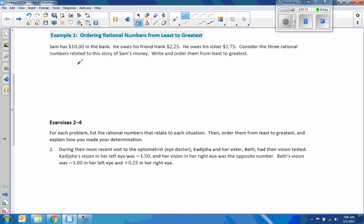Here's example 1, ordering rational numbers. Sam has $10 in the bank. He owes, keyword there, he owes his friend $2.25, he owes his friend Frank $1.75. Consider the three rational numbers related to this story of Sam's money. Write and order them from least to greatest. So I wrote them, now we need to order them. Obviously a positive number is greater than a negative number, so that's going to go over here. But then we have to decide, well some people think negative 2.25 is less than 1.75.